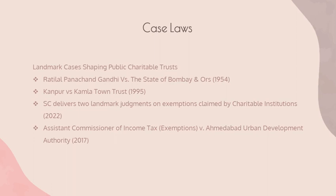Another notable case is Assistant Commissioner of Income Tax v. Ahmedabad Urban Development Authority, 2017, where the issue dealt with the Urban Development Authority claiming tax exemption for its public welfare activities. The court held limitations on commercial activities for charitable tax benefits, emphasizing that incidental commercial activities should be minimal and directly related to public charitable purposes. These cases provide important insight into the interpretation and application of laws governing public charitable trusts, ensuring clarity and accountability in their operation.